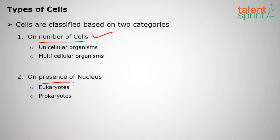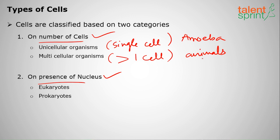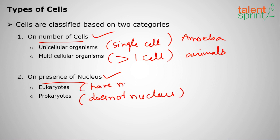The first category is based on number of cells, and the second is whether a nucleus is present or not. If there is only a single cell, those organisms are called unicellular organisms. If there is more than one cell, they are called multicellular organisms. Amoeba and paramecium are examples of unicellular organisms, while animals are very good examples of multicellular organisms. Prokaryotes don't have a nucleus, and eukaryotes have a nucleus.